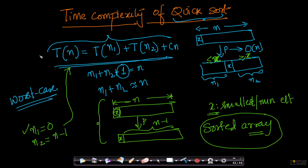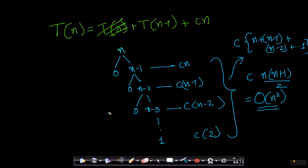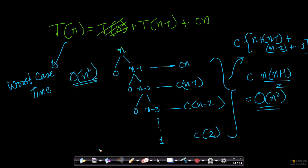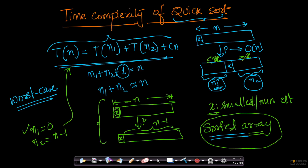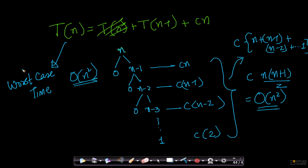So the worst case of quicksort is when you have an already sorted array. After partition, you get subarrays of size n1=0 and n2=n-1, giving this recurrence relation. The worst case time complexity is order of n squared. There are hacks to fix this and make it order of n log n — we will cover that in the next video. For now, the worst case is order of n squared.